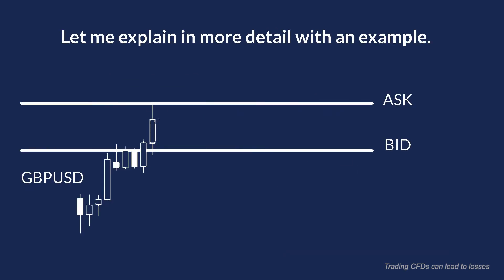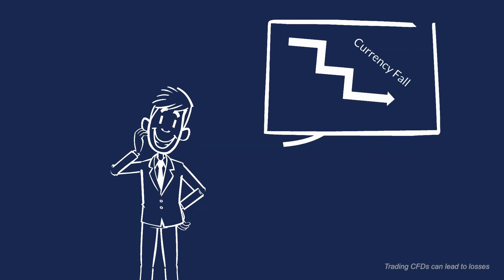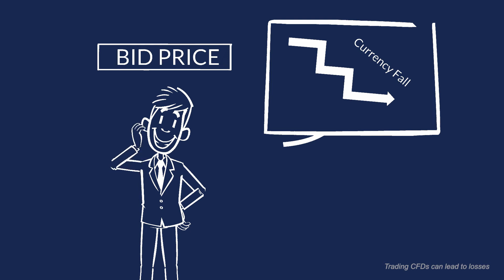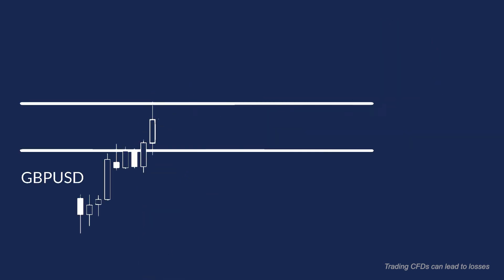Let's assume the British pound to US dollar has a bid price of 1.33020. That's the price the trader wants to sell British pound to US dollar. If a seller thinks the currency will fall, he might sell it at the bid price to take advantage of the fall. If the British pound to US dollar has an ask price of 1.33040, that's the price the trader wants to pay in order to buy the currency pair.